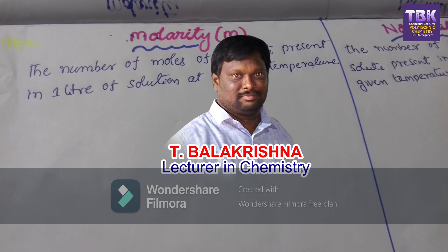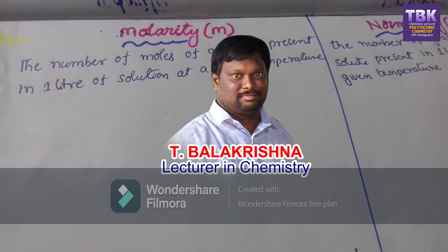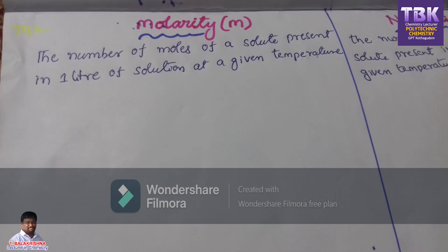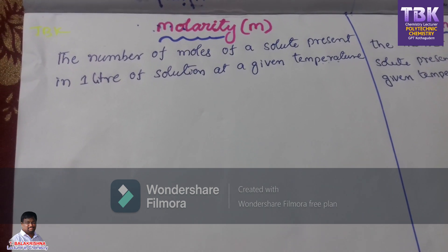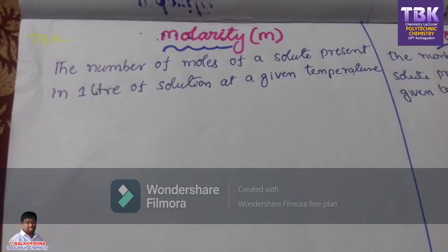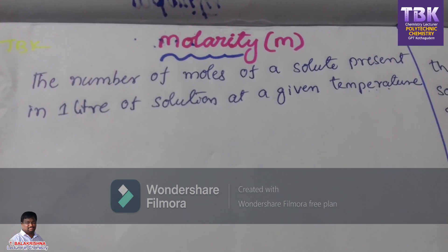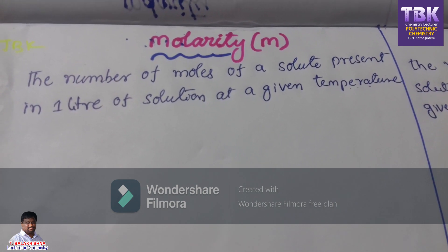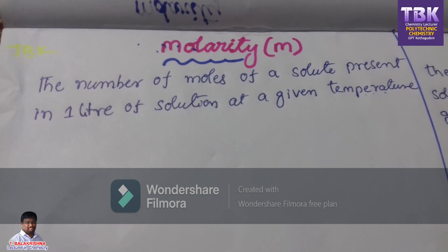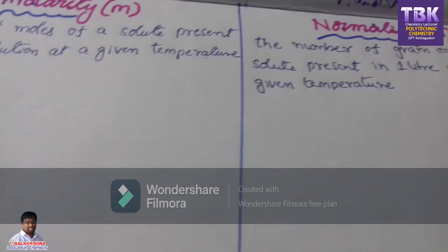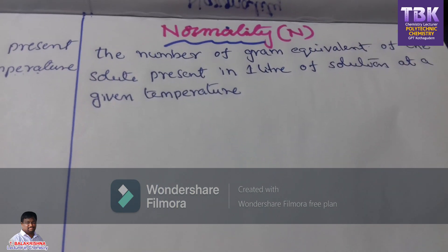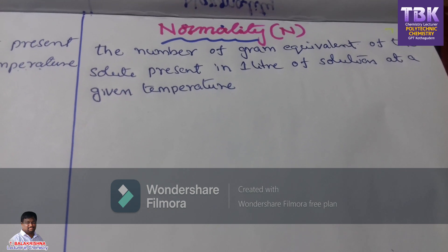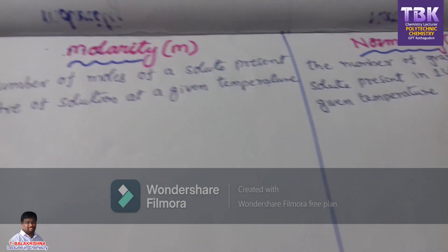Hi students, this is T. Balakrishna, chemistry lecture, GPT Kottakudam. Today our topic is molarity versus normality. We already learned the definition of molarity: the number of moles of a solute present in one liter of solution at a given temperature is called molarity. Now we are learning the definition of normality: the number of gram equivalents of the solute present in one liter of solution at a given temperature is called normality.